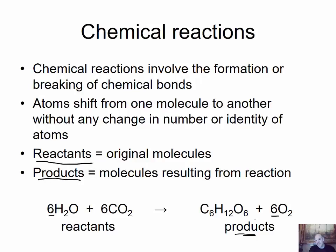We cannot destroy or create matter, including atoms, so we need the same number of atoms on each side of the equation. Formulas stay as they are — glucose is always C6H12O6 and oxygen is always O2. To balance the equation, we place coefficients in front. With 6 molecules of water, we get 12 hydrogens and 6 oxygens, which must match the atoms on the product side. Atoms should be balanced on each side.